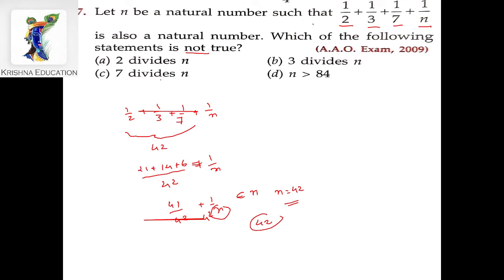Now we will see which option is the correct answer. First, we check if 2 divides n. This means checking if n is divisible by 2. Since 42 divided by 2 equals 21, this is correct.